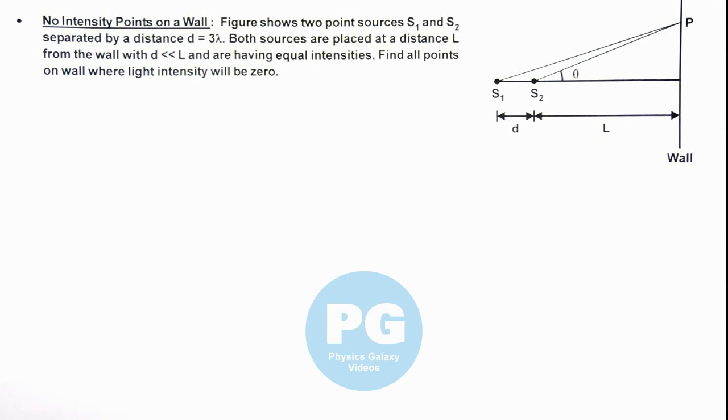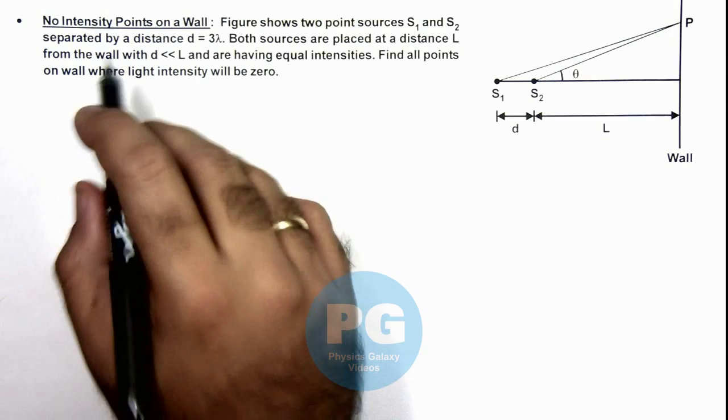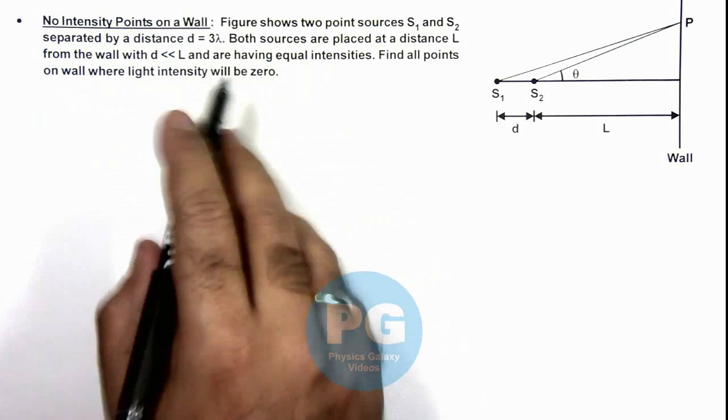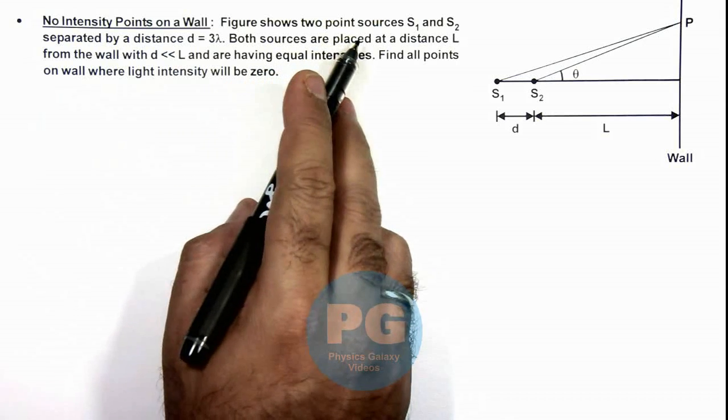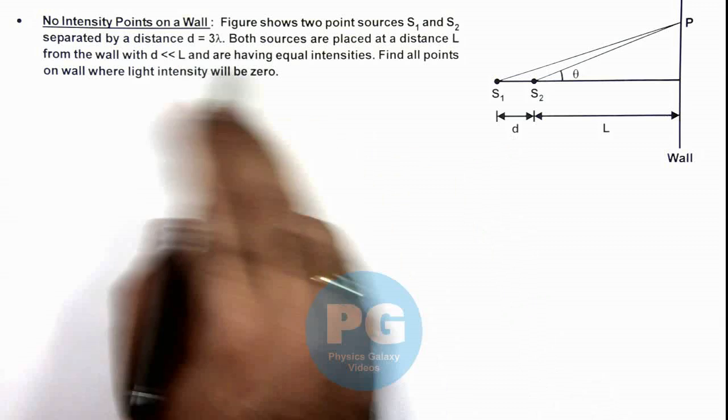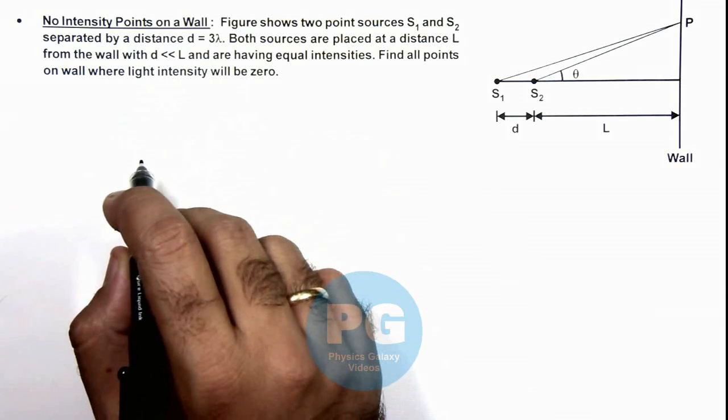In this illustration, we'll study about no intensity points on a wall. Here we are given that the figure shows two point sources S₁ and S₂ separated by a distance d which is equal to 3 times the wavelength lambda.